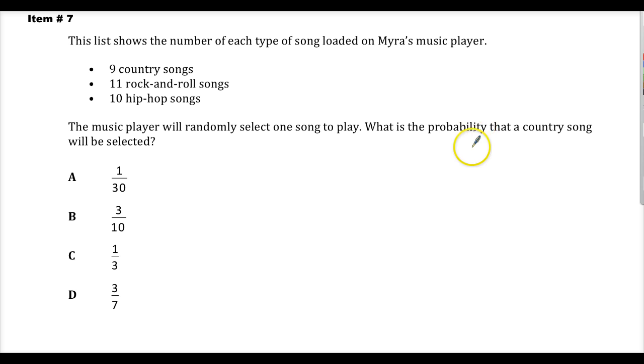The big deal here is they said probability. Every time you see the word probability, you need to think of total. Because it's the first thing that you always have to do. Sometimes they're nice and give it to you. This time they're not. But the total is what you need to find first. It's important.